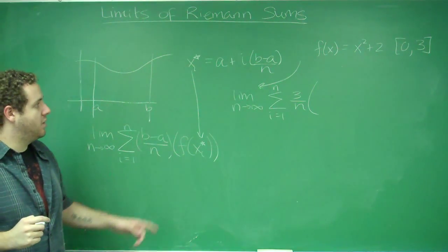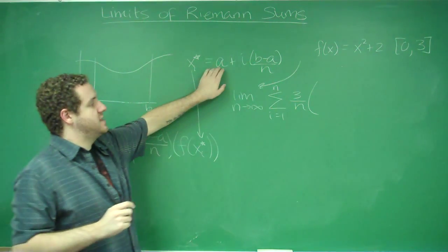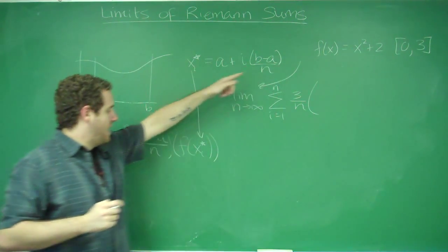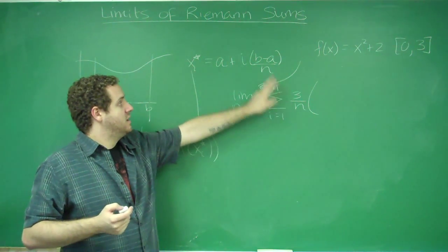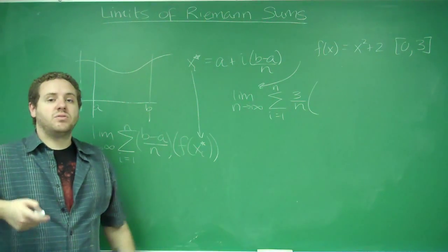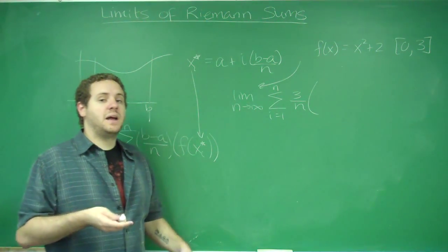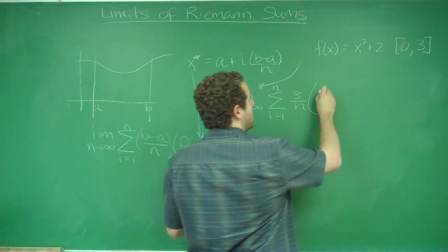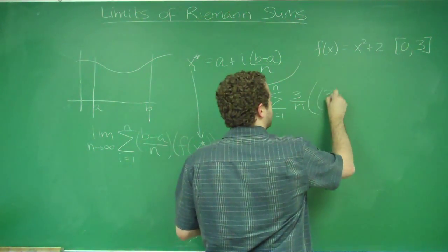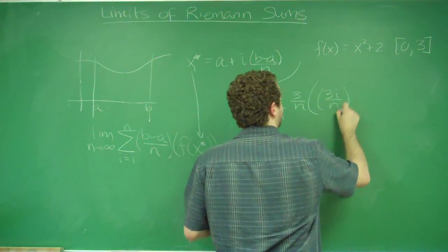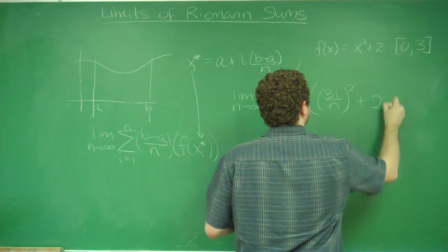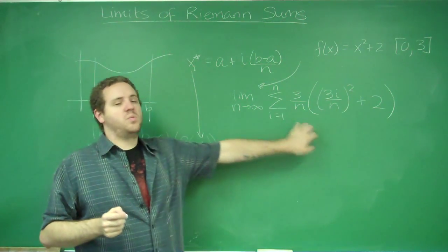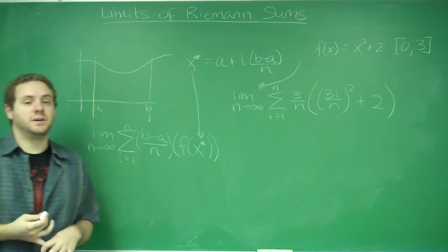We're putting xi star in instead of x and substituting all of our values. A is 0 because we're starting at 0. b minus a over n is 3 over n. Multiplying that times i gives 3i over n, and that is now our x. So if we do that to our function, we have to take 3i over n squared plus 2. This is the sum that we have to evaluate to figure out our area.